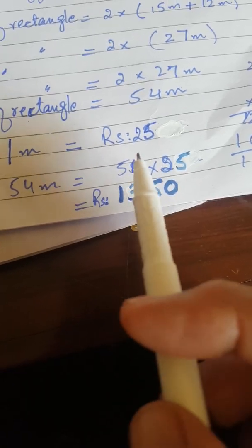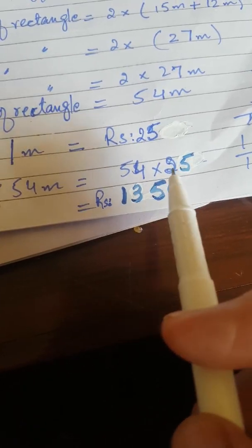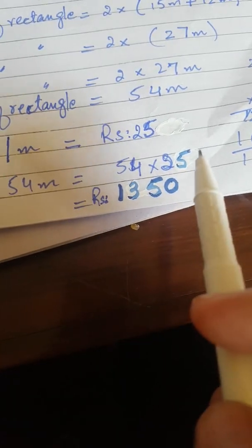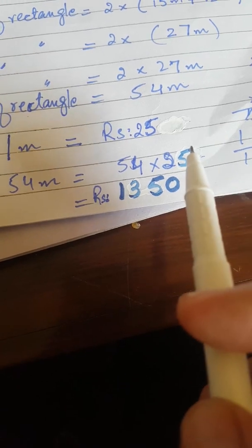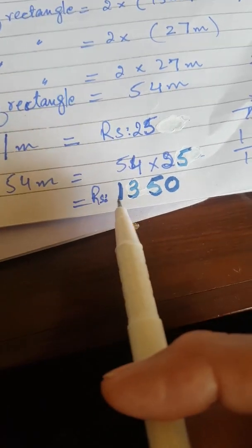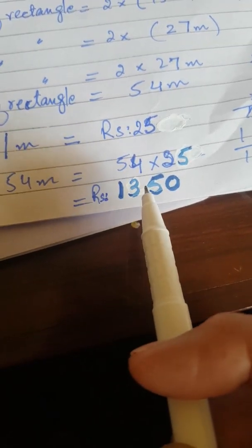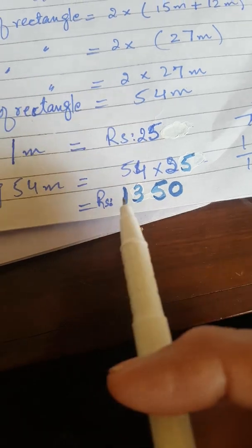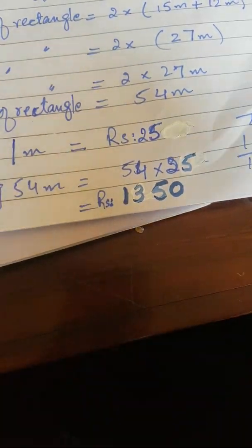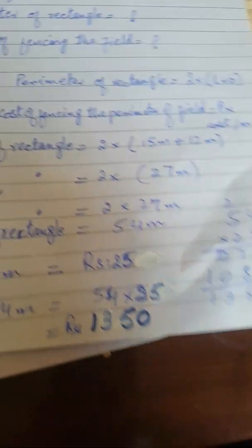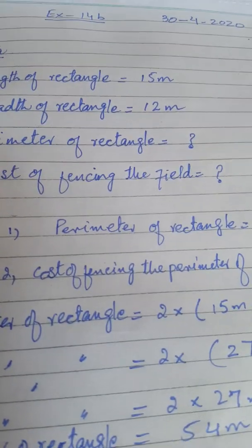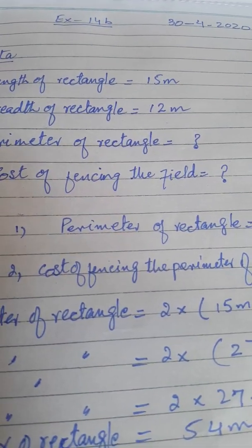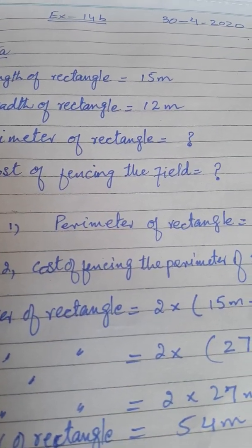To find the cost, multiply the perimeter of 54 meters by the cost per meter, which is rupees 25. You get rupees 1350 as the cost of fencing. So you will solve this question in your notebook — this is the fifth question of the exercise.